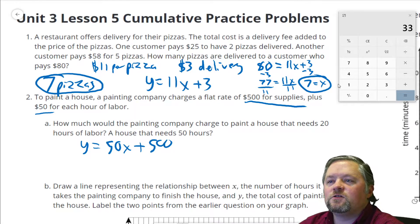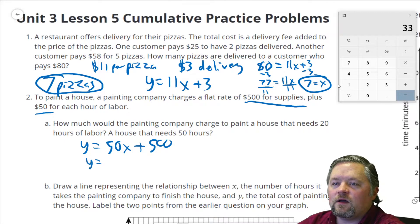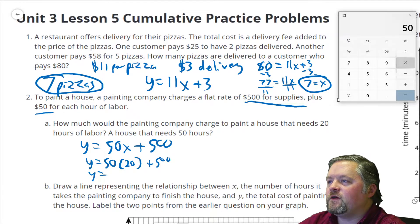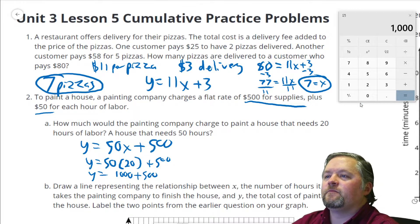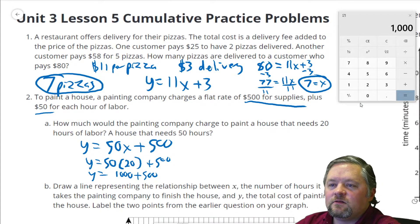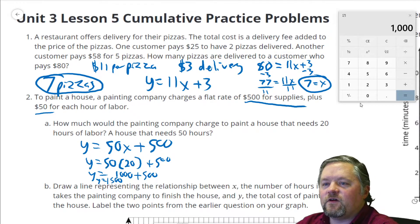How much would the painting company charge to paint a house that needs 20 hours of labor? Y equals 50, substitute in 20 hours of labor, plus $500. Y equals 50 times 20. 50 times 20, $1,000 plus $500 for supplies. $1,000 plus $500, y equals $1,500.